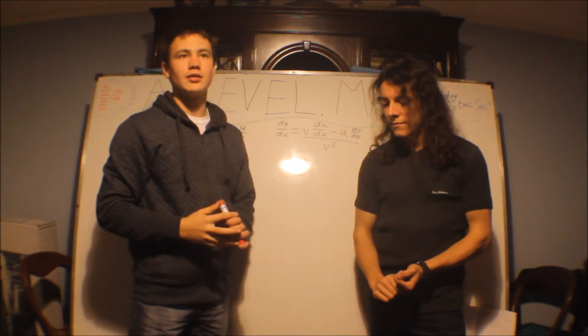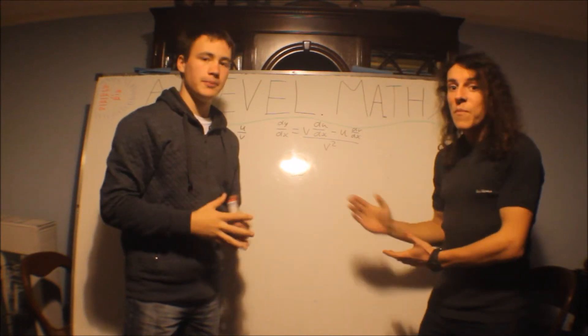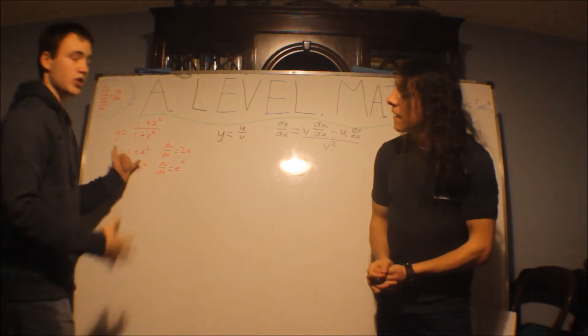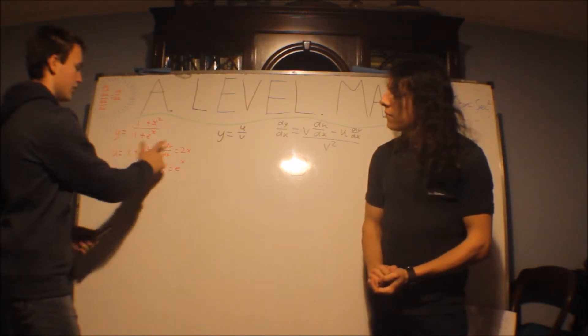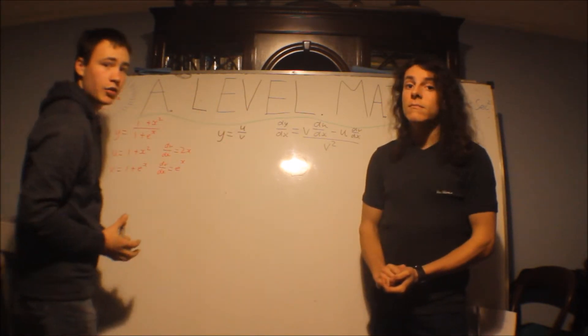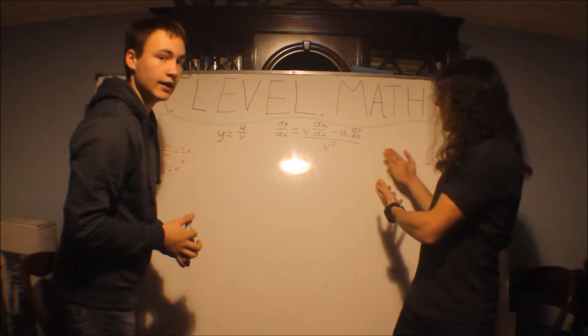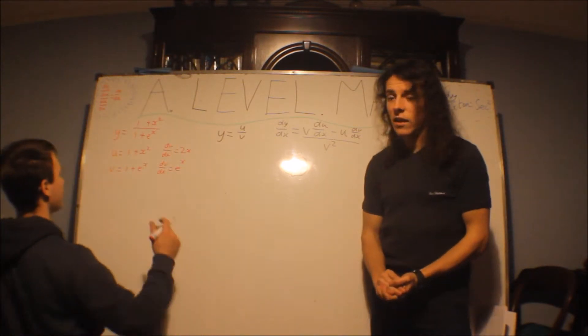Anyway, back to this. So just like in core one differentiation, you simply differentiate. Now we can apply the core three silly thingy. Quotient rule of death. So let's do that.